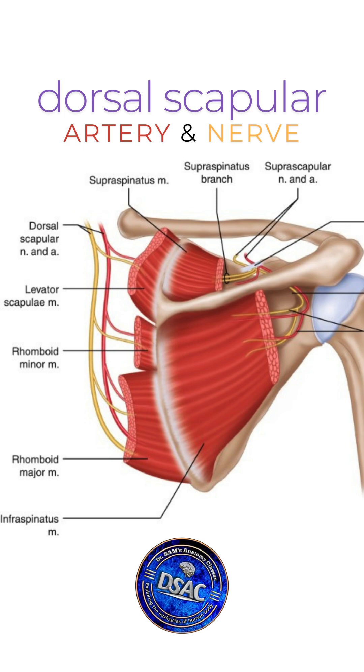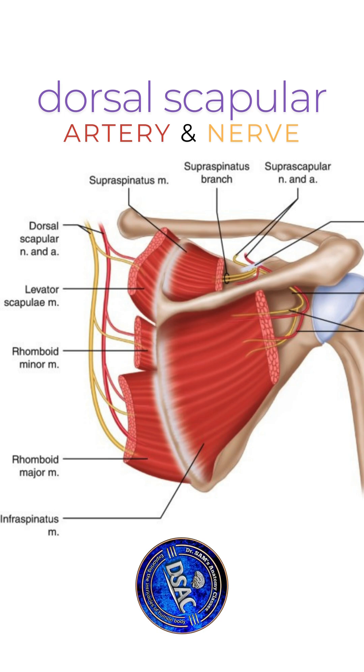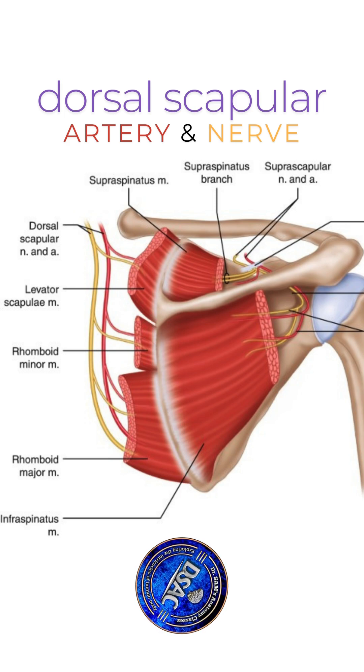This nerve and vessels will be running deeper to the three muscles it innervates: levator scapulae, rhomboidus minor, and rhomboidus major.